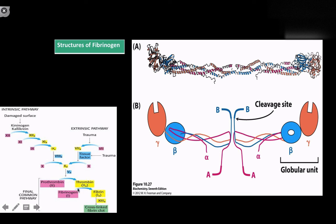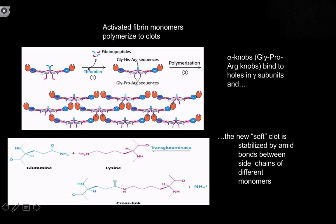We activate thrombin. Thrombin acts on converting fibrinogen into fibrin. Fibrinogen has three chains: an alpha, a beta, and a gamma. On the beta and gamma globular units there are binding sites that, once proteolysis by thrombin occurs, reveal sequences where cross-linking can take place — not just between the alpha and gamma chains, but the beta globular head unit can bind the beta cleavage site as well. These sequences tend to be rich in glycine and arginine. Once we form this interlocking structure, we have a soft clot. Transglutaminase then comes in and catalyzes the formation of a covalent bond that makes a very thick and dense fibrin mesh.